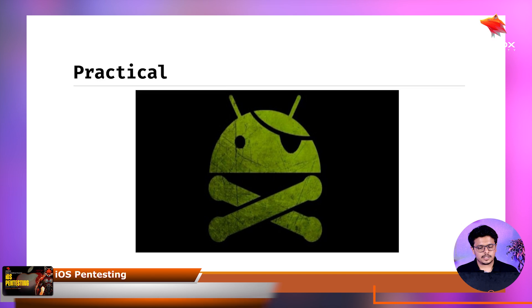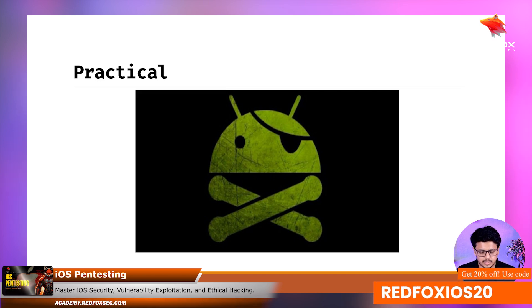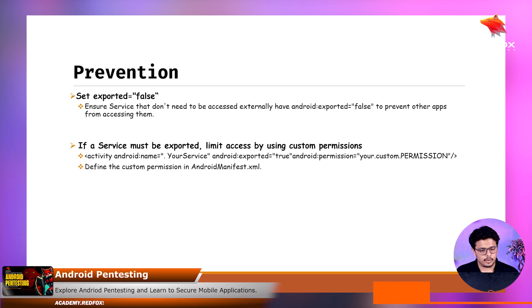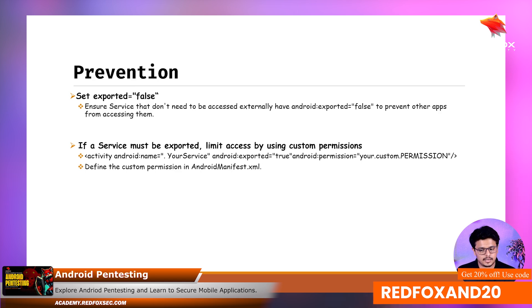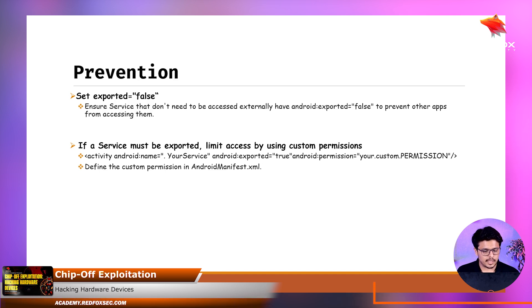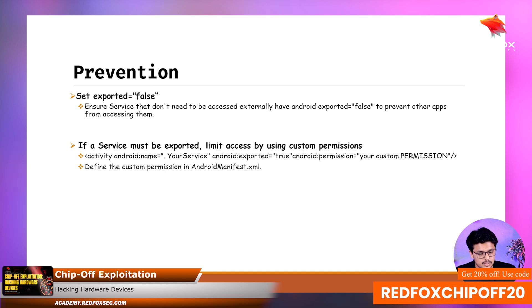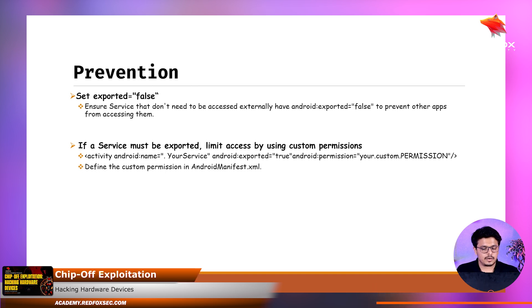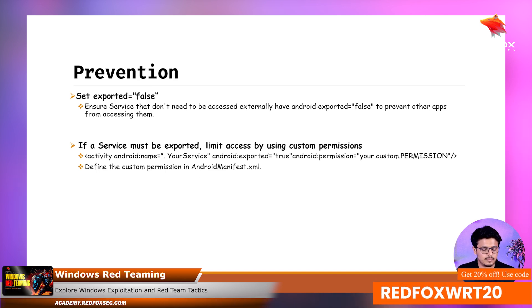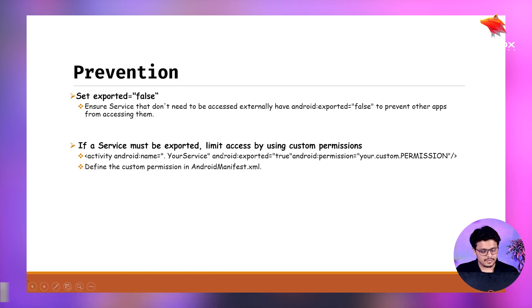When it comes to penetration testing, we don't just exploit — we also need to communicate prevention steps to developers. The main prevention for any IPC-related issues in Android is: if the service is not required to be exported, set `exported="false"`. If a service must be exported to communicate with another component within the device, ensure that appropriate custom permissions are defined. Without proper permissions, any external application can communicate with it and retrieve sensitive data.